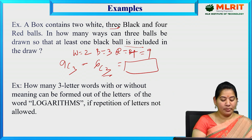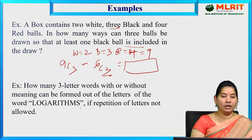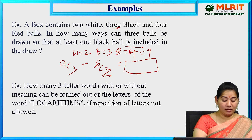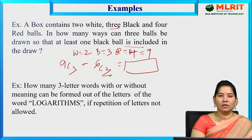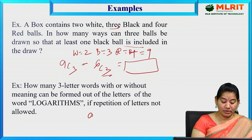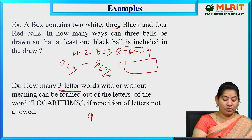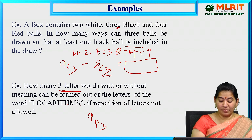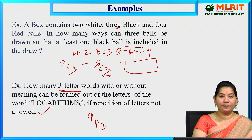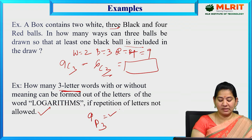How many 3-letter words with or without meaning can be formed from the letters of the word LOGARITHMS if repetition of letters is not allowed? The word LOGARITHMS has 10 letters. Since repetition is not allowed and we want 3-letter arrangements, the answer is 10P3.